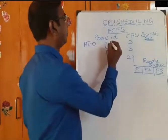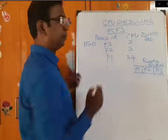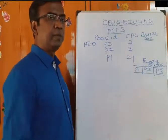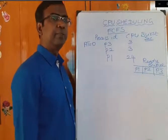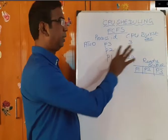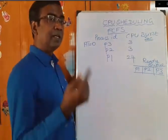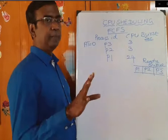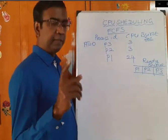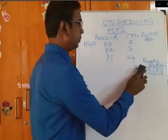Consider the same processes as per our previous example. P1 CPU burst time is 24 seconds, P2 3 seconds, P3 3 seconds, but they arrive in a different order — arriving in the ready queue in different order. So this will also be changing.